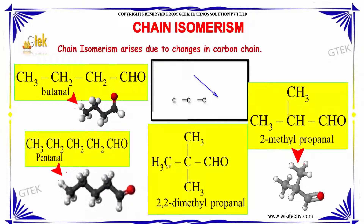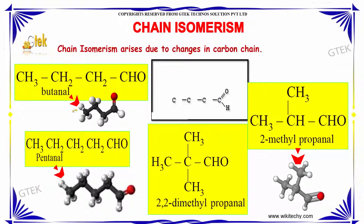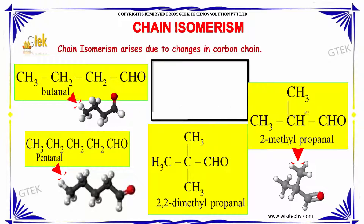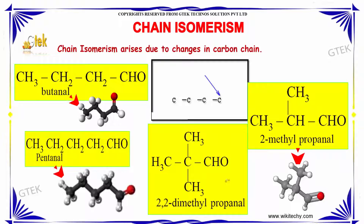The reason why chain isomerism arises is due to changes in the carbon chain. For example, butanol and 2-methylpropanol are chain isomers, which along with 2,2-dimethylpropanol and pentanol are also in isomerism.